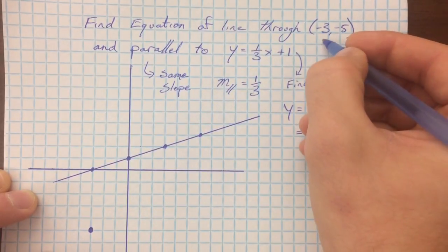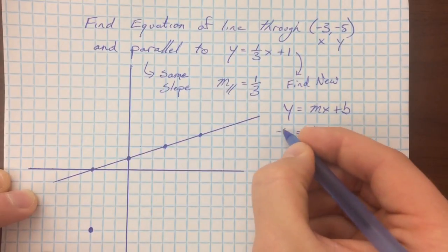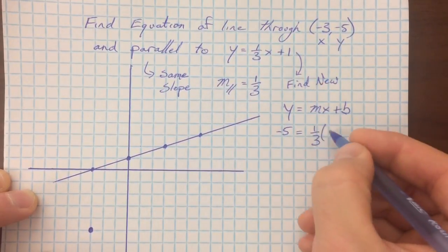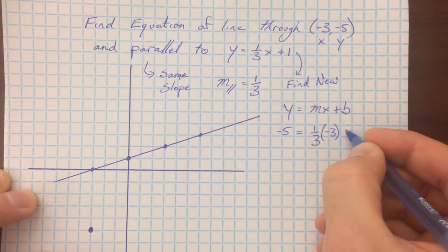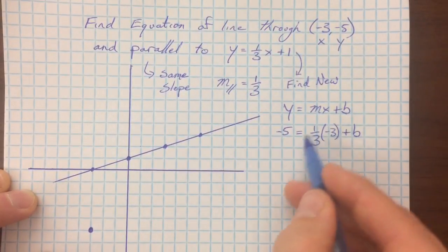And then negative 3, negative 5 has to be a solution of this line. And so if I plug in negative 5 for my y, negative 3 for my x, and then find my new y-intercept, I can multiply these out.